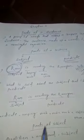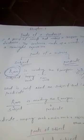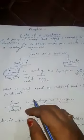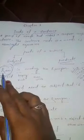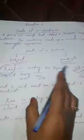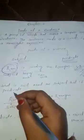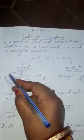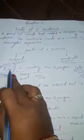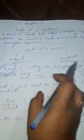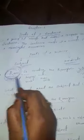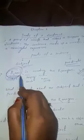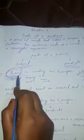Let me give an example. Rama is reading the Ramayana. Take this example: Rama is reading the Ramayana. Here, Rama is the subject in the sentence.